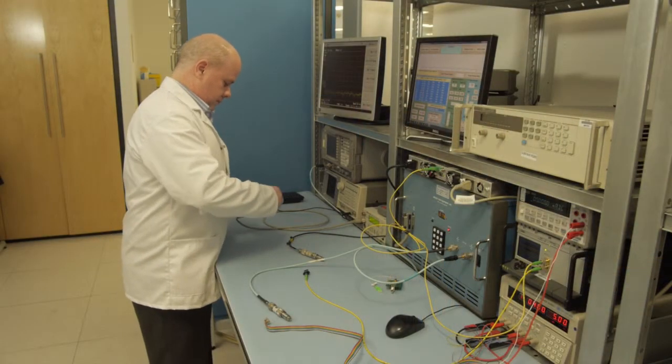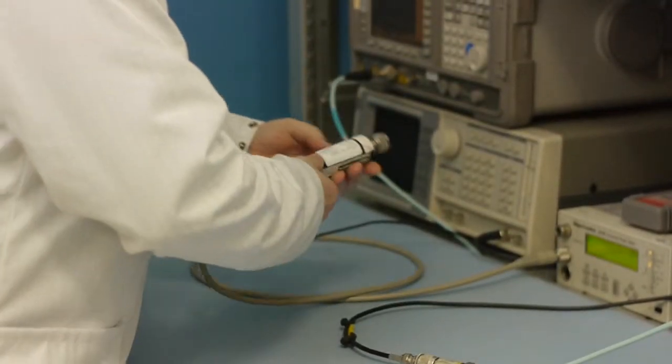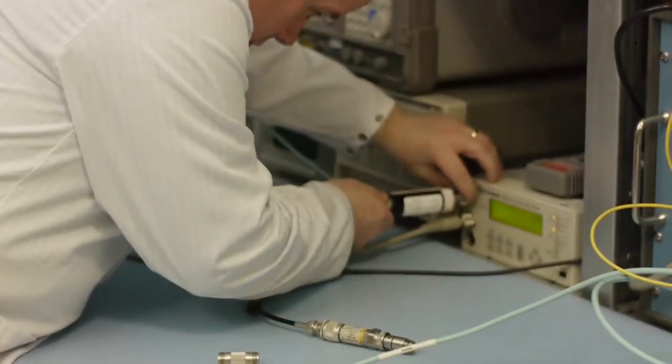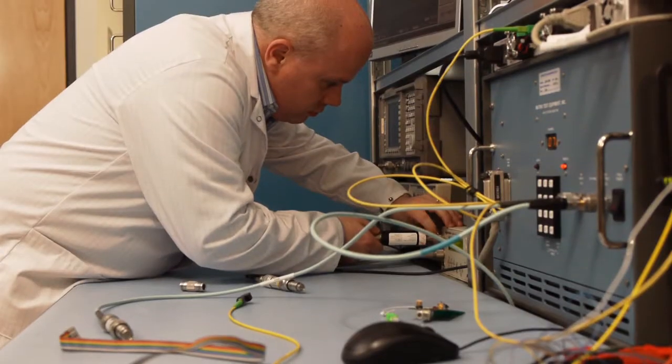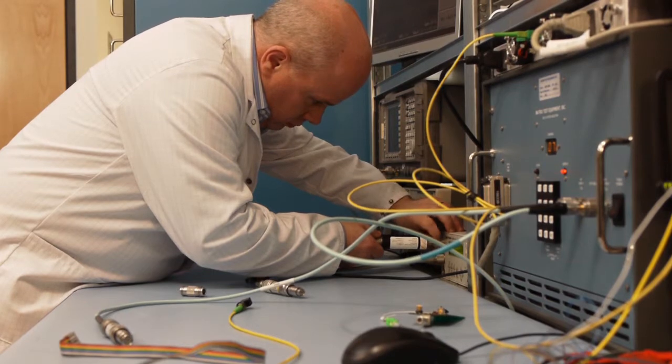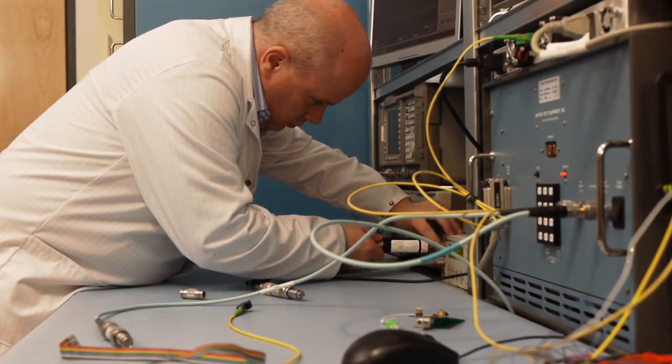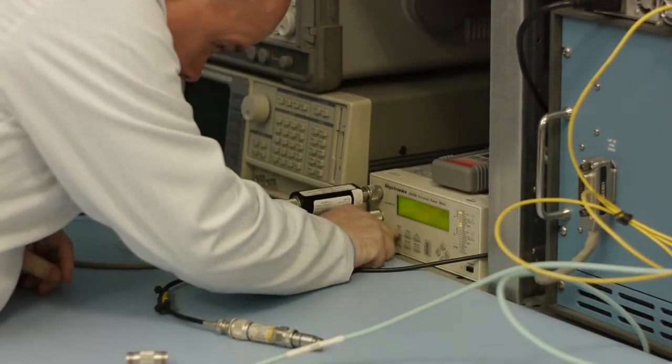Before any measurement can begin, the amplitude of each analog video carrier is leveled to a specific value using a power meter. However, the power meter sensor must be calibrated first so that the power measured will be accurate.